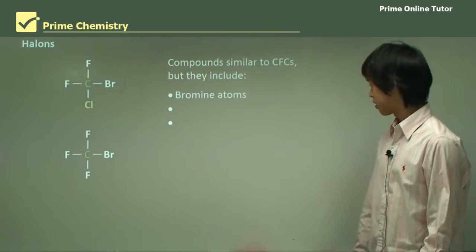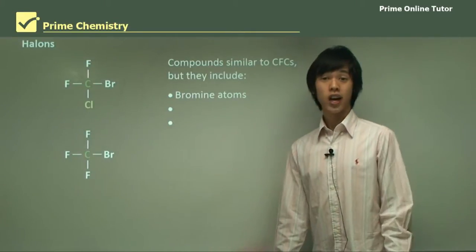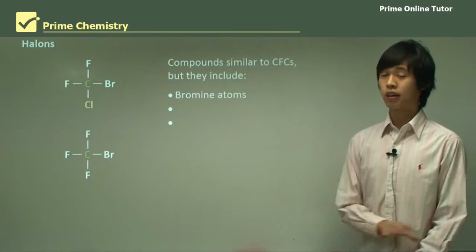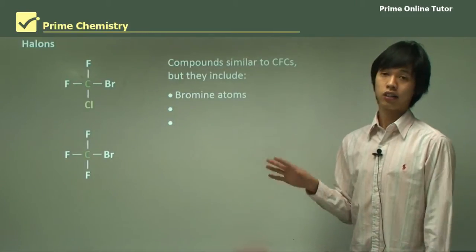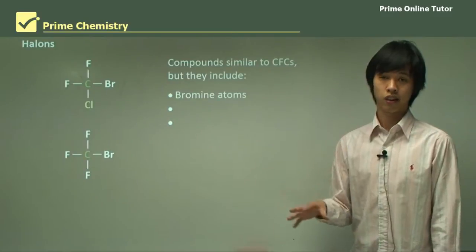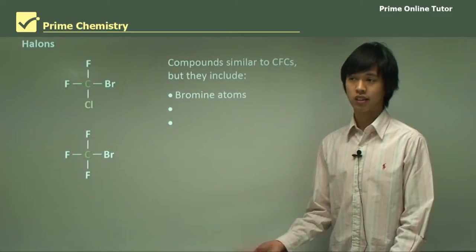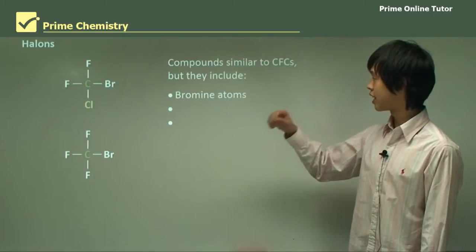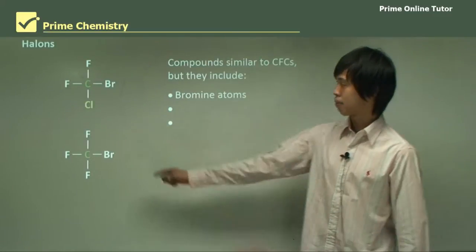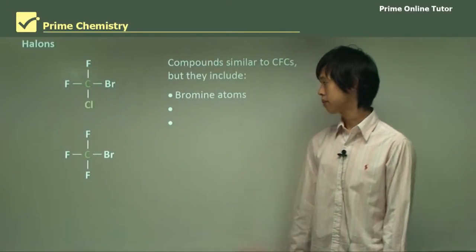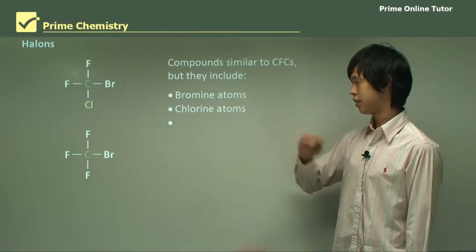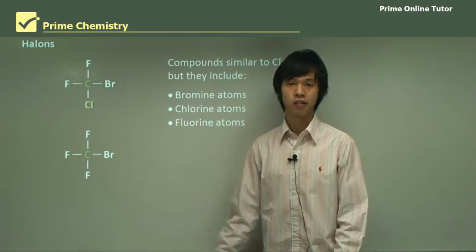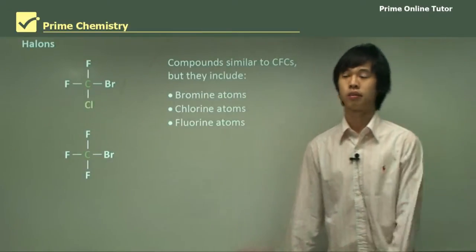What are some alternatives? They thought halons would be the next big thing. Remembering that chlorofluorocarbons are just carbon, chlorine, and fluorine — halons are similar, but they contain bromine as well, or chlorine, or fluorine. The addition of bromine is the main difference between a CFC and a halon.